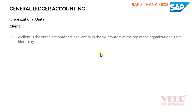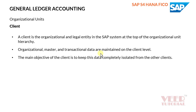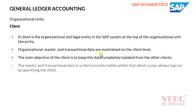The first one is Client. A client is the organizational unit and legal entity in the SAP system at the top of the organizational unit hierarchy. Organizational, master, and transactional data are maintained on the client level. The main objective of the client is to keep this data completely isolated from other clients.